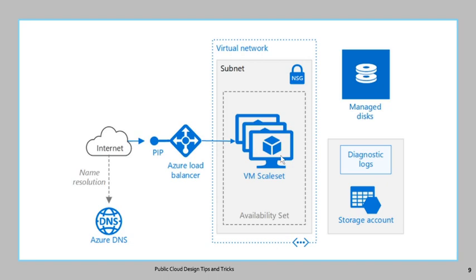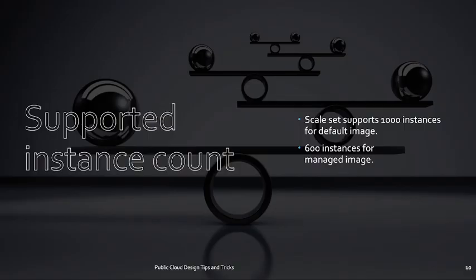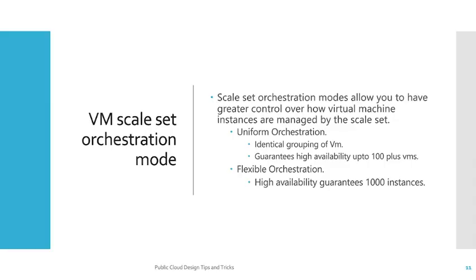VM Scale Sets can also be deployed across multiple availability sets or availability zones, so you can define high availability for your deployment. Regarding supported instance counts: with flexible orchestration you can scale out up to a thousand instances, and up to 600 instances for managed images.